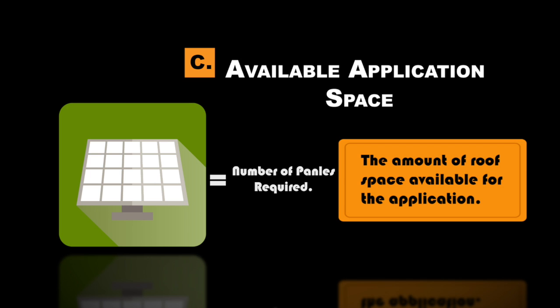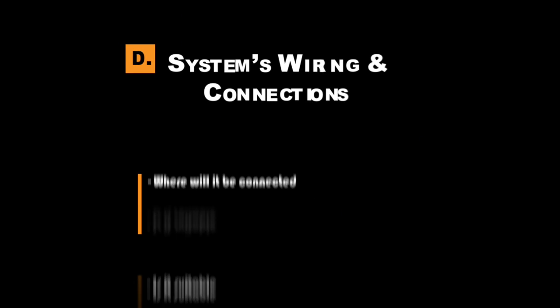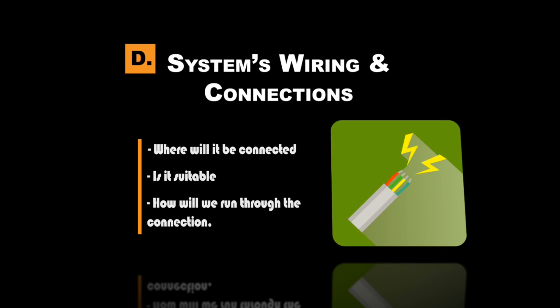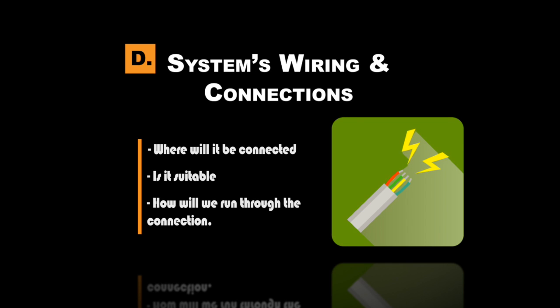We look at actual wiring connections — where the system would be connected, whether all of that is suitable, and how we would take all the wiring through to that particular connection point.